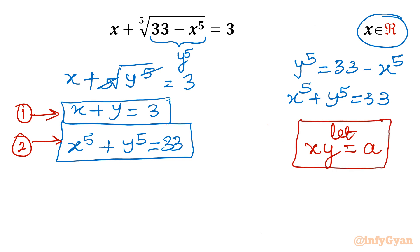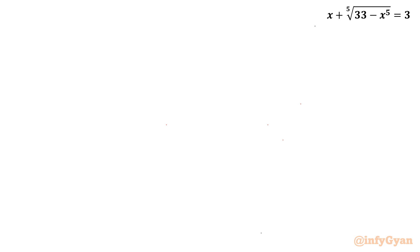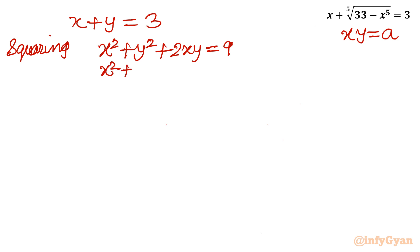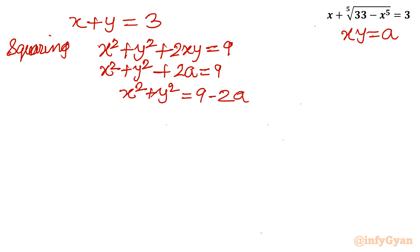I will consider equation 1 for squaring and cubing. So x plus y equals 3, and xy equals a. Squaring both sides: x^2 plus y^2 plus 2xy equals 9, so x^2 plus y^2 plus 2a equals 9, giving us x^2 plus y^2 equals 9 minus 2a. This is a very important result from squaring both sides.